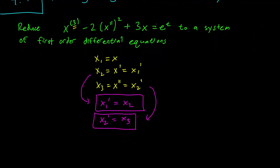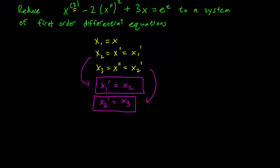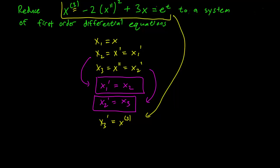Our third equation is going to be slightly more work. You might have guessed that it's going to involve x3 prime. So let's think about this: x3 prime is going to be x triple derivative. But we know from the original equation that that's just going to be equal to e to the t plus 2x double prime squared minus 3x. What remains is simply to write down our equation in terms of the variables x1, x2, and x3.